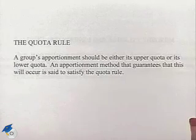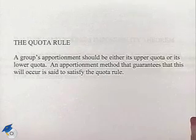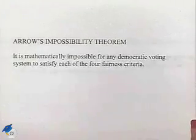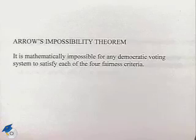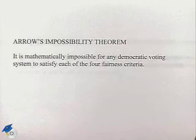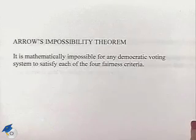We also have another impossibility theorem called Arrow's impossibility theorem, which states: it is mathematically impossible for any democratic voting system to satisfy each of the four fairness criteria.